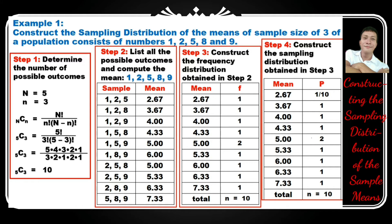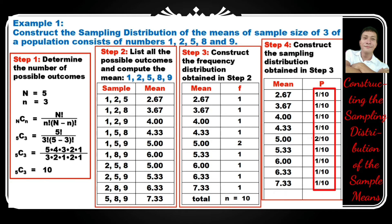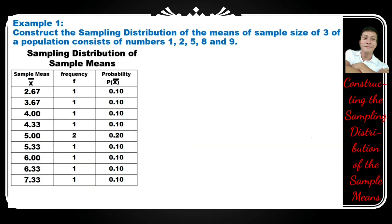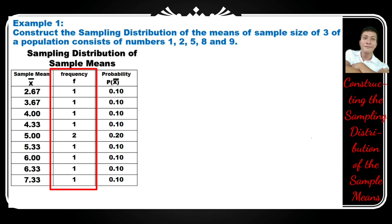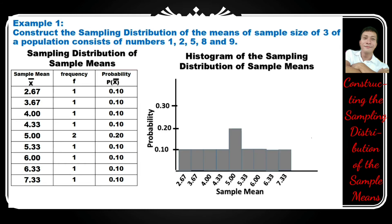Step 4: construct the sampling distribution obtained in step 3. The sampling distribution has column 1 as the mean and column 2 as the probabilities. The probability is the frequency over the total number of samples, which is 10. Since 2.67 has one frequency, its probability is 1 over 10. Other samples are also 1 over 10 except 5, which is 2 over 10. Probabilities can be expressed as fractions or equivalent decimals: 0.10 for 1 over 10 and 0.20 for 2 over 10. The three-column sampling distribution includes sample mean, frequency, and probability.